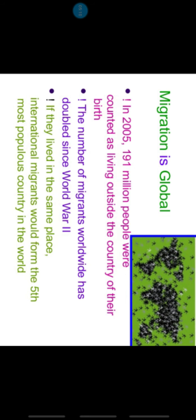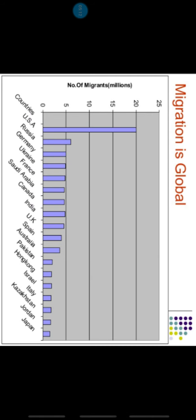This data is about migration being global. Countries have been named where people are doing migration. You can see the list — USA, Russia, Germany, Ukraine, and India is also given here — these are the top countries involved in international migration.